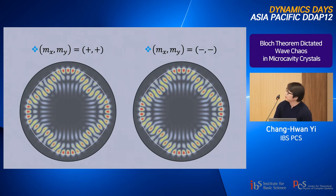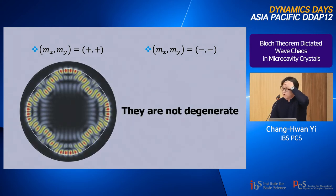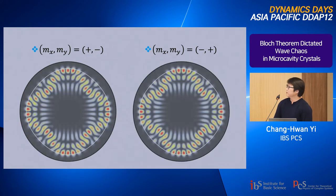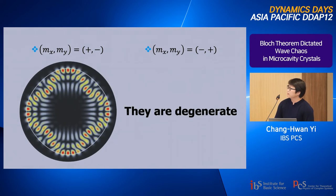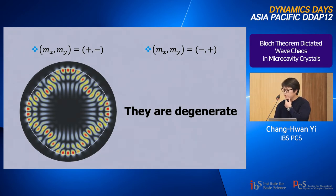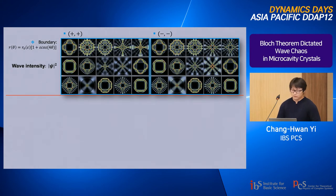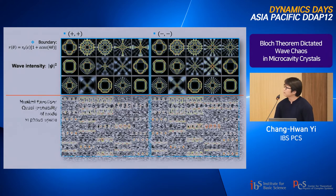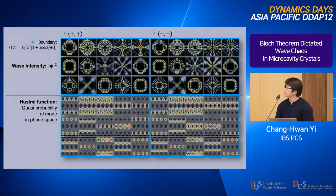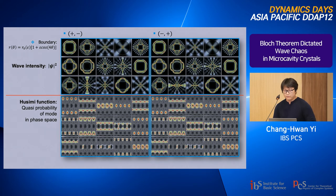I illustrate the even-even and odd-odd cases: by the C4 symmetry rotation, their wave functions are not the same. On the other hand, for the even-odd and odd-even cases, rotation shows they are exactly the same. This means that in a C4 symmetric boundary, the even-odd and odd-even modes are simply 90-degree rotations of each other. Here are computed examples of the even-even and odd-odd modes, along with the corresponding Husimi functions in phase space.